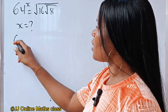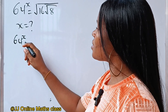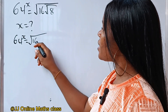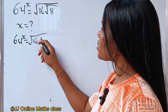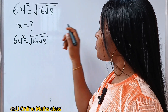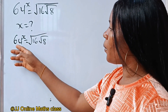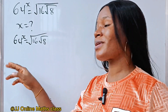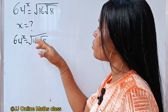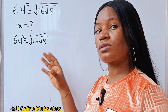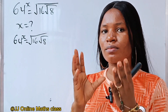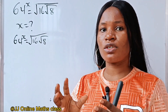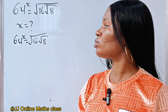We have that 64 to the power of x is equal to square root of 16 times root 8. Now, once you look at this, notice that all of them can be expressed in base 2. We are going to do that with some kind of strategy so that we will be able to get our solution.